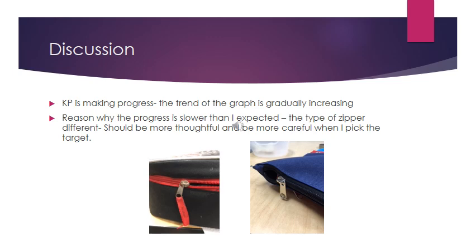The picture on the left shows that the zipper on his lunch bag has a piece of fabric attached to it, which makes it easier to zip and unzip. The pencil pouch does not have the fabric, so he really needs better fine motor skills to zip and unzip it. In the future, when picking targets, we will be more careful to ensure the targets have similar features — for example, similar types of zippers — to help him generalize his skills.